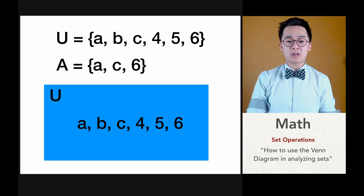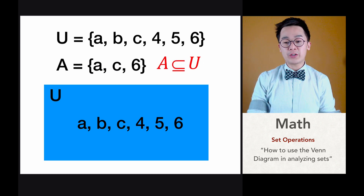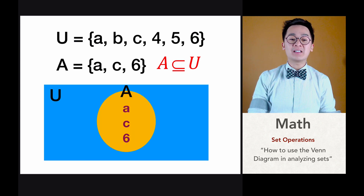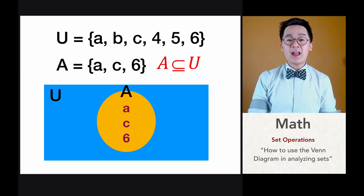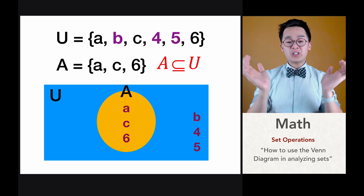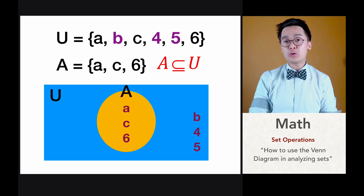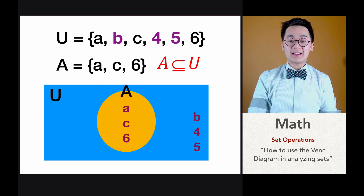Let's say we have a subset of U called set A, and in set A we have the elements A, C and 6, which is ultimately a subset of the union set. We can modify our diagram and highlight subset A showing it contains A, C and 6, while the rest of the elements not found in A remain outside the circle. This is what we call a Venn diagram, representing the subset of the union set inside a closed circle.